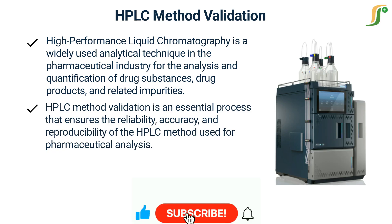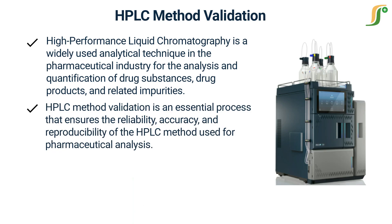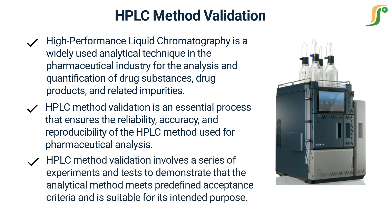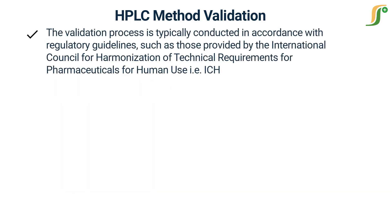HPLC method validation is an essential process that ensures the reliability, accuracy, and reproducibility of the HPLC method used for pharmaceutical analysis. It involves a series of experiments and tests to demonstrate that the analytical method meets predefined acceptance criteria and is suitable for its intended purpose. The validation process is typically conducted in accordance with regulatory guidelines, such as those provided by the International Council for Harmonization, which is ICH.